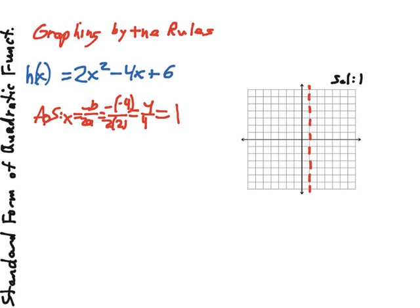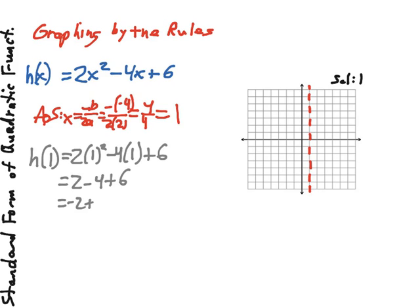Then, moving down the line to find our vertex, I need to evaluate h of 1, which will be 2 times 1 squared minus 4 times 1 plus 6, which is 2 minus 4 plus 6. 2 minus 4 is a negative 2 plus 6, which is simply 4.